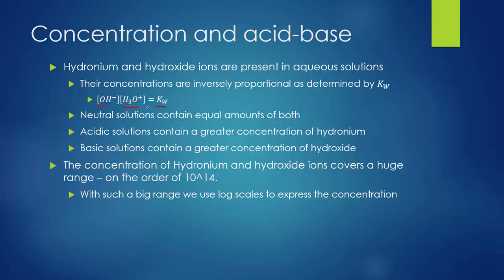In a neutral solution we have equal amounts of those. Water autoionizes and for every hydroxide we get a hydronium. For acidic solutions we get extra H3O+; for basic solutions we get extra OH-. These concentrations can cover a huge range — adding hydrochloric acid drives hydronium way up and hydroxide way down, on the order of 10 to the 14th difference. We use a log scale to express concentration because it lets us use small numbers to represent very big or very small numbers.